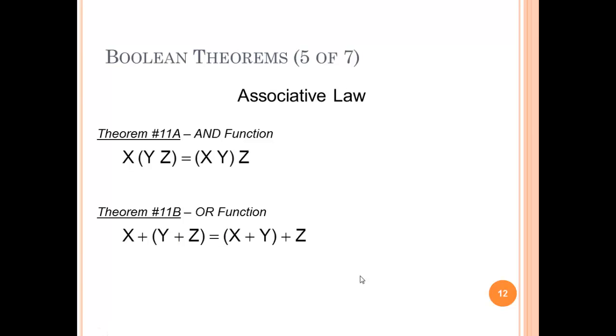The associative law says that groupings are relative, so if you have Y AND Z joined in an AND gate and you have X joined in an AND gate to that output, it's the same as if you joined X and Y first and then joined Z to it. It doesn't matter. And then for the OR function, if you ORed together Y and Z first and then ORed in X, it doesn't matter whether you did it that way or first did X and Y and then ORed in Z.